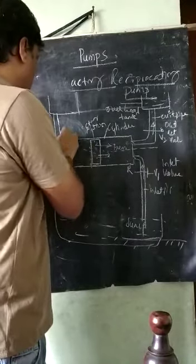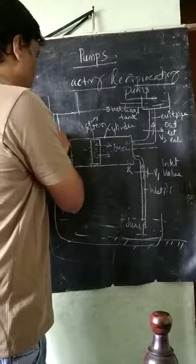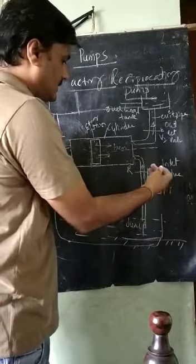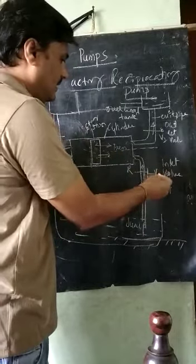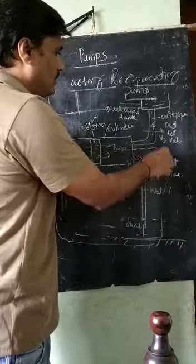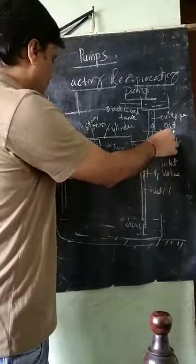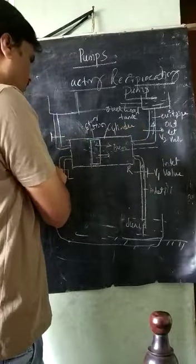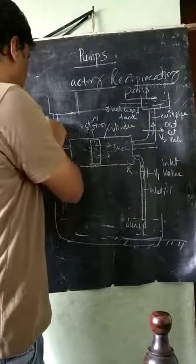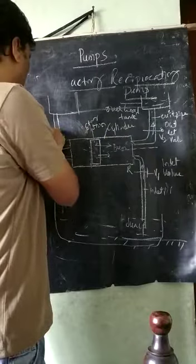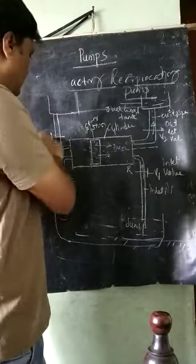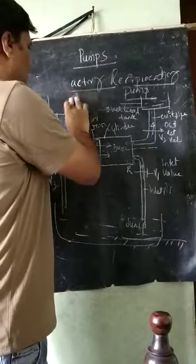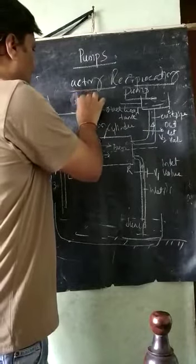There are inlet and outlet valves on both sides. P1 is the inlet valve and P2 is the outlet valve at the right side. At the left side, P3 is the inlet valve and P4 is the outlet valve. This is the overhead tank here.